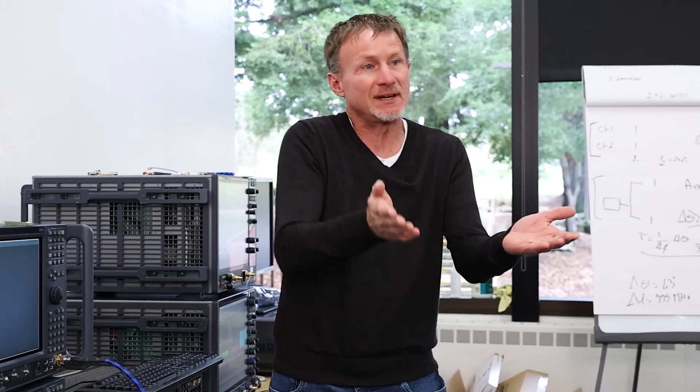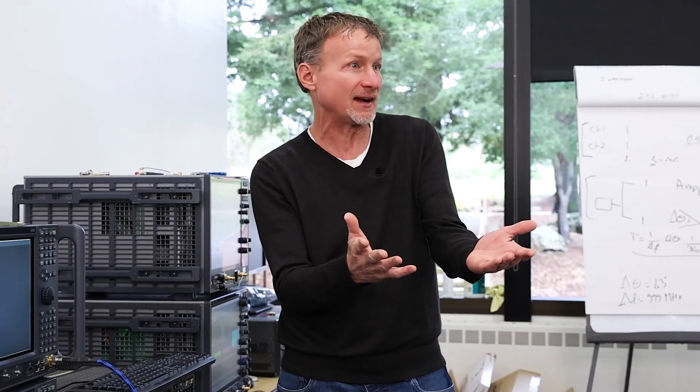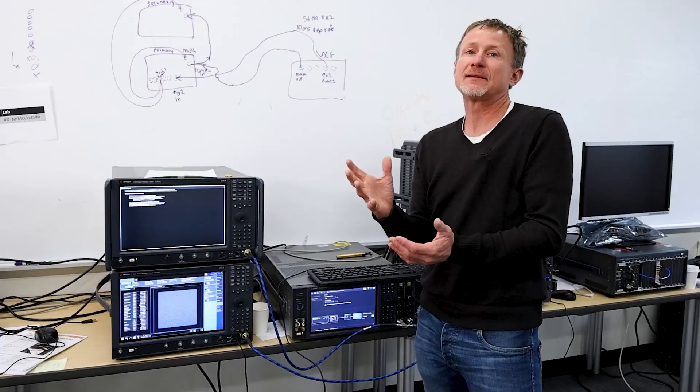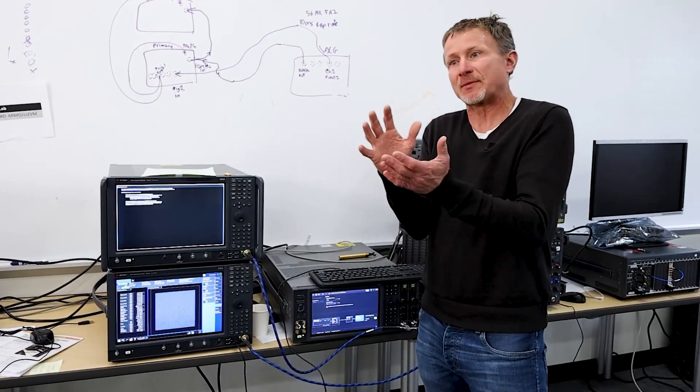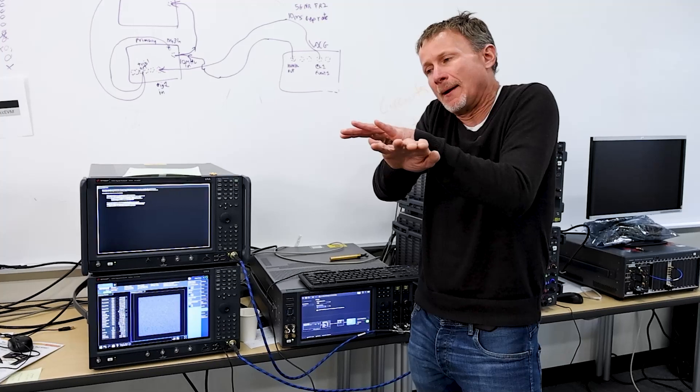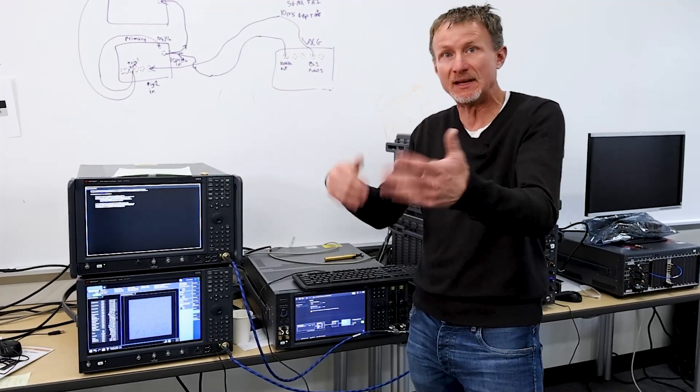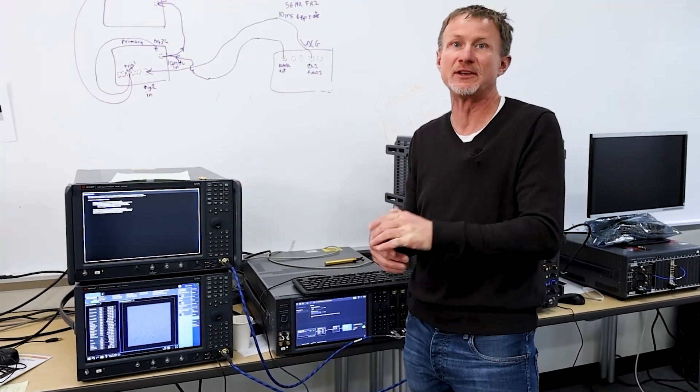And then on the analyzer, the key thing was just really getting the attenuator set properly. For the single channel EVM measurement, you're kind of optimizing between distortion and noise. And for the cross-correlation technique, you want to drive the analyzer a little less hard. So there's no distortion component. So that means adding in a little extra attenuation than you would normally.